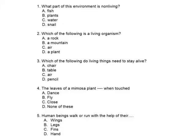Now on the screen, are you able to see the worksheet? The first question asks: what part of the environment is non-living? We have to find the non-living from the given options. The options are A. Fish — fish is a living thing, so not right. B. Plant. C. Water. D. Snail. The right answer is Water, because water is a natural non-living thing.